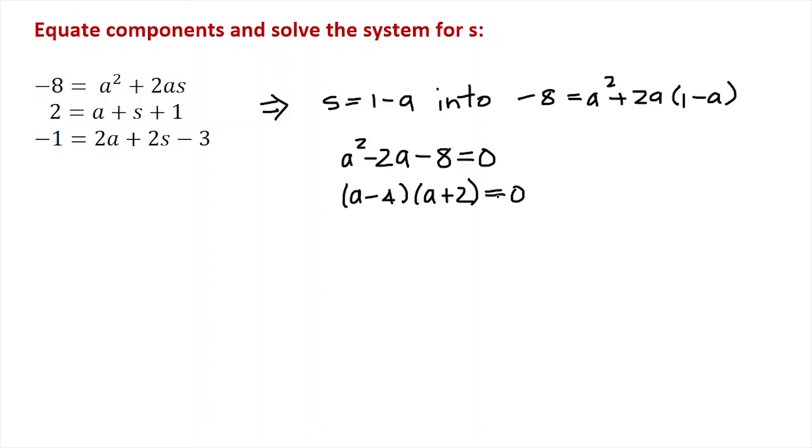And of course, by the zero products property, that implies that a is positive 4 or a is negative 2. So at the point where the particle has, I could plug in 4 into the position equation, r(t). That would be the point of tangency where the line would naturally go through the point (-8, 2, 1). And similarly, for a equals negative 2.